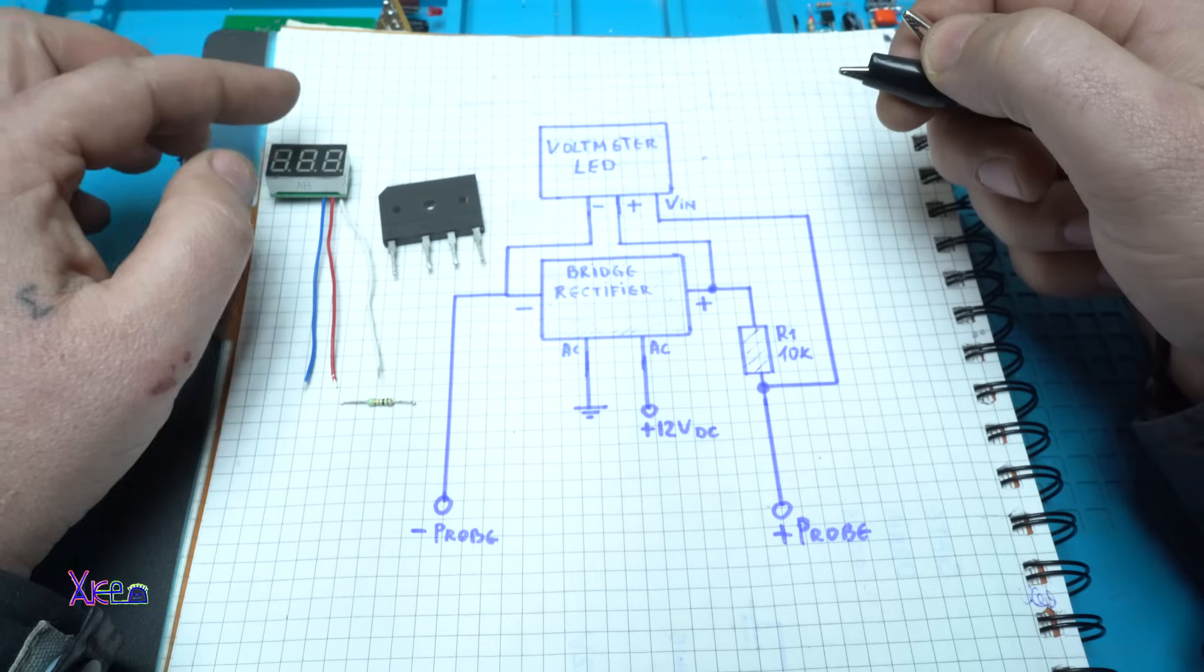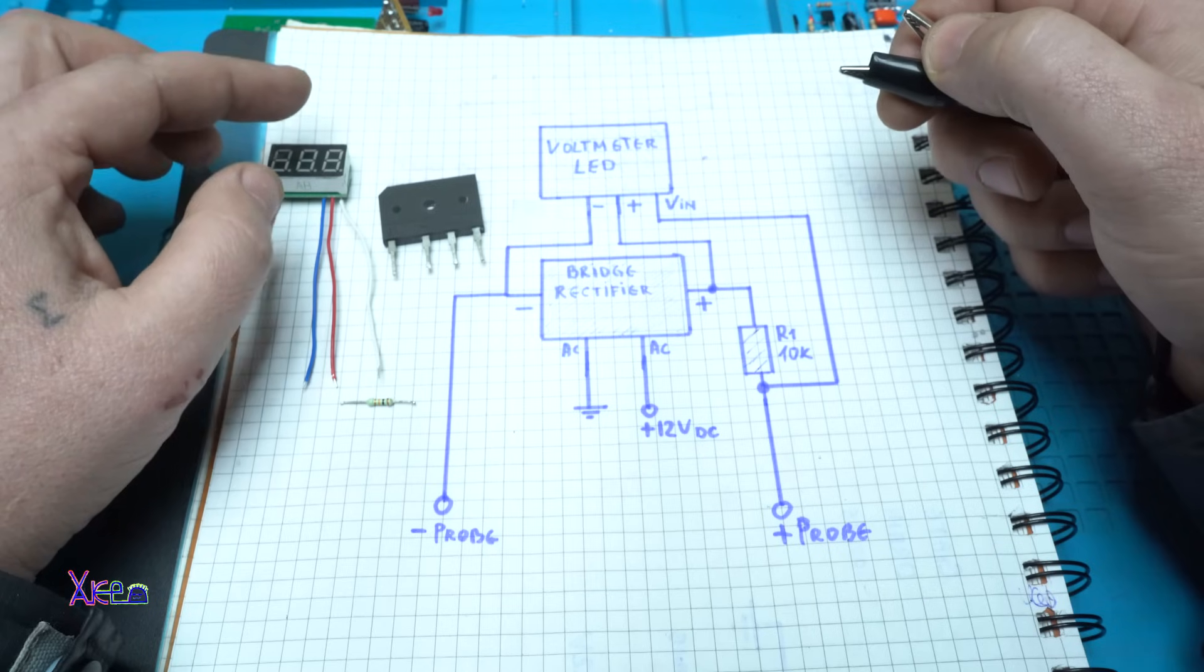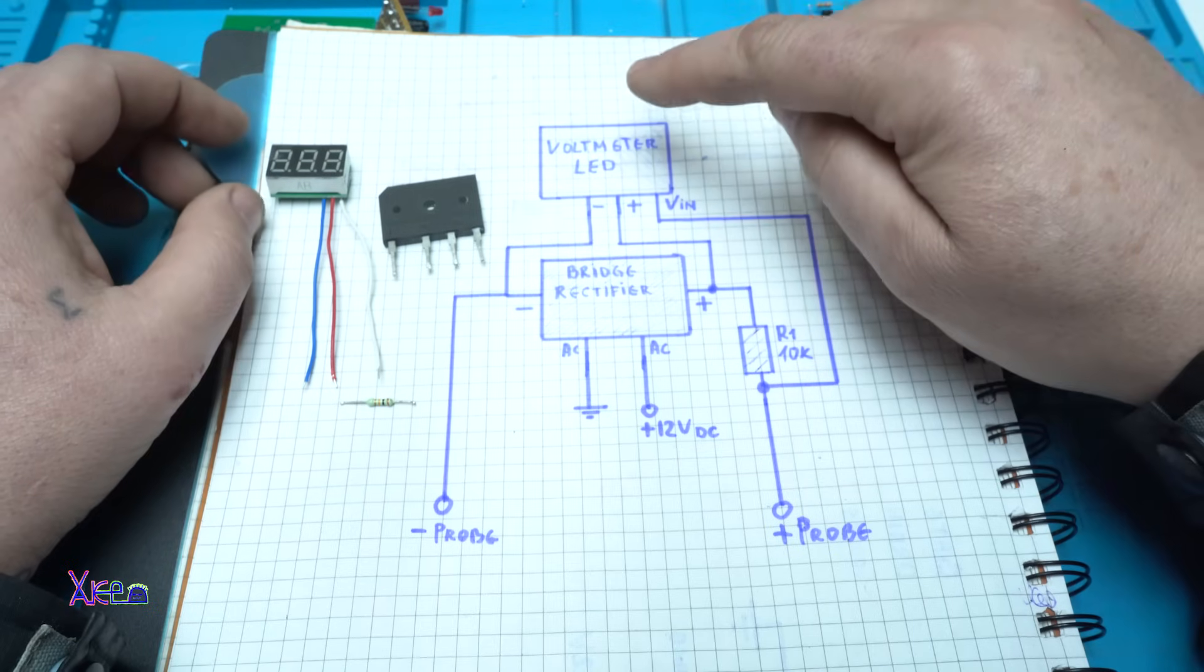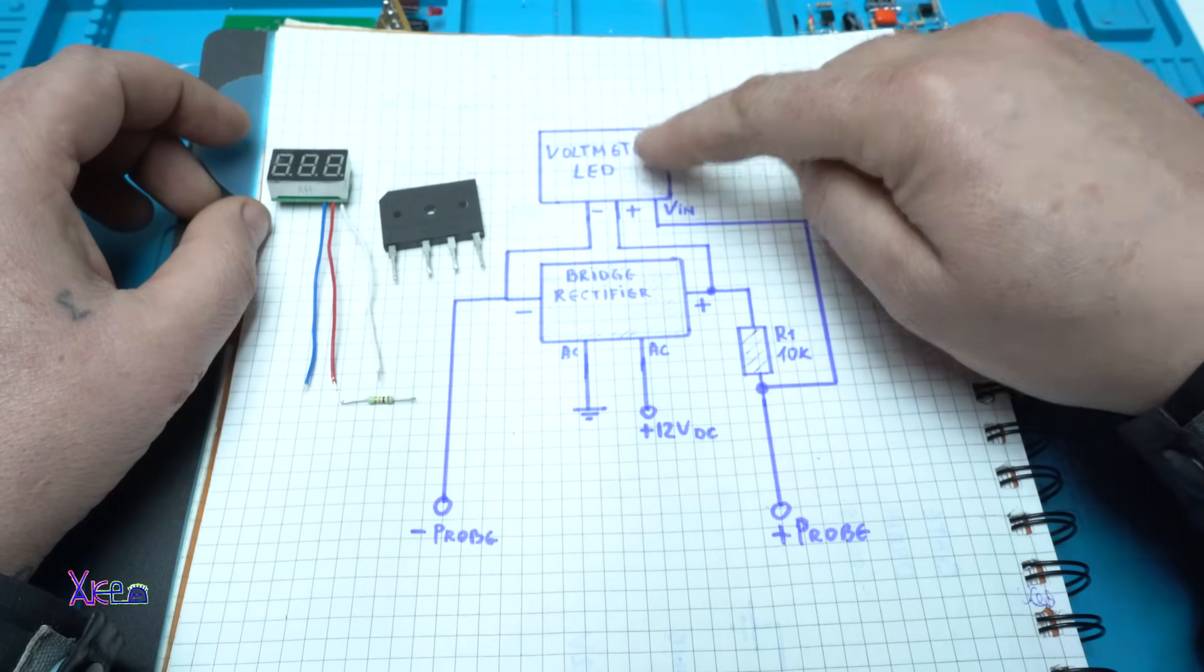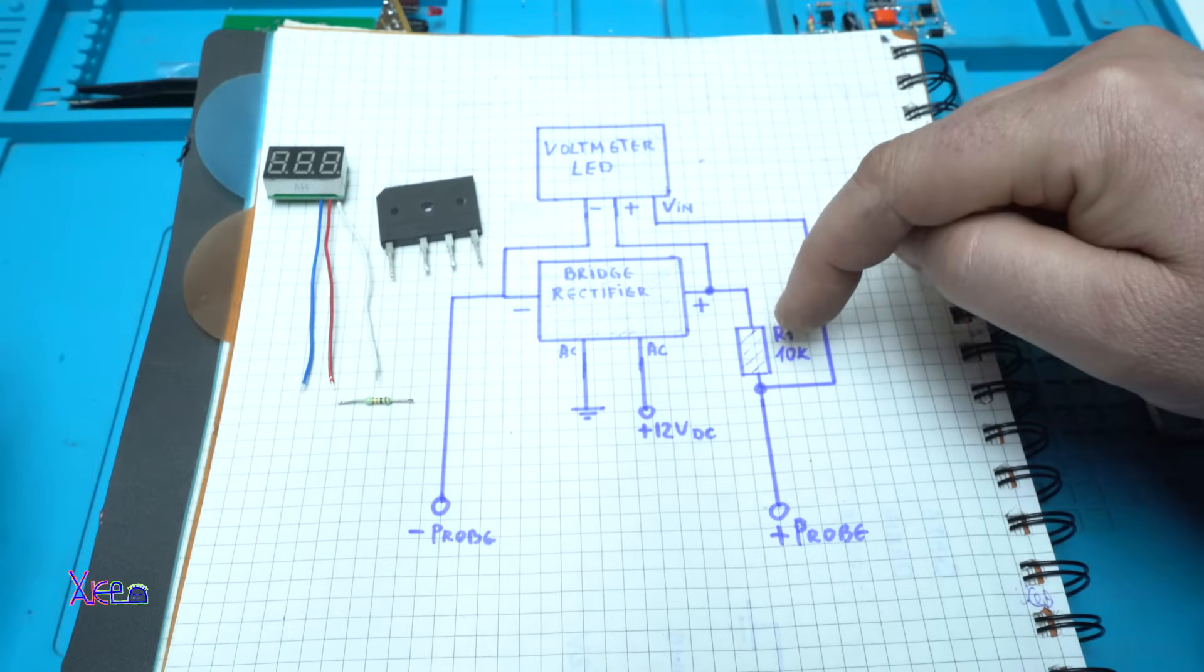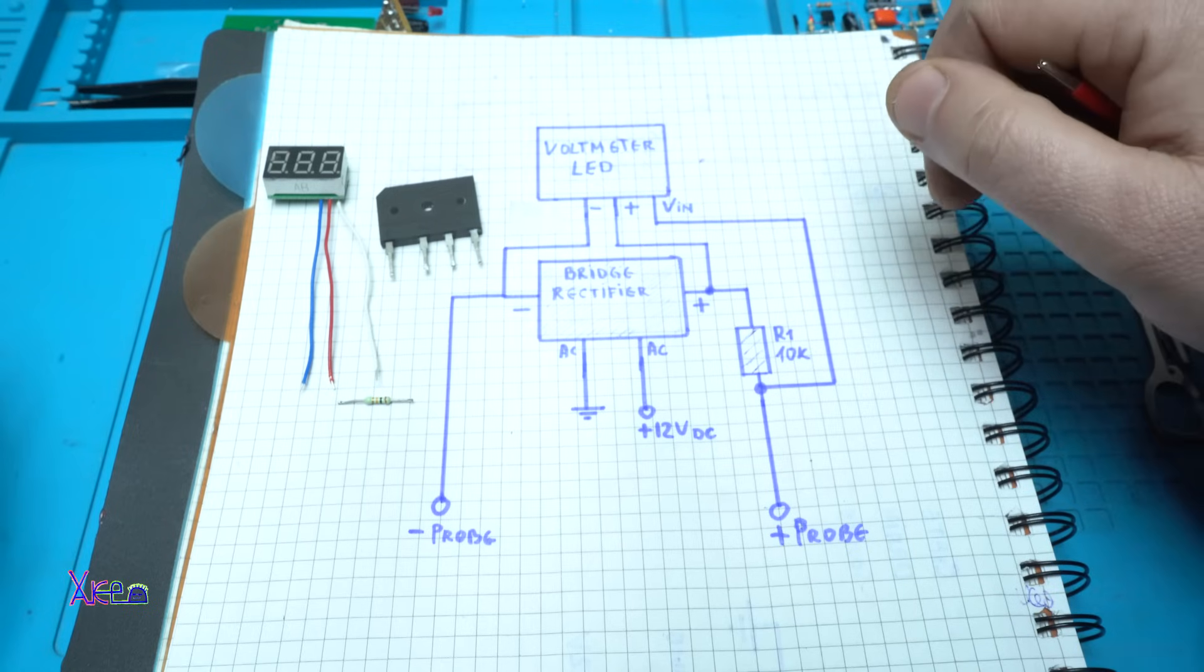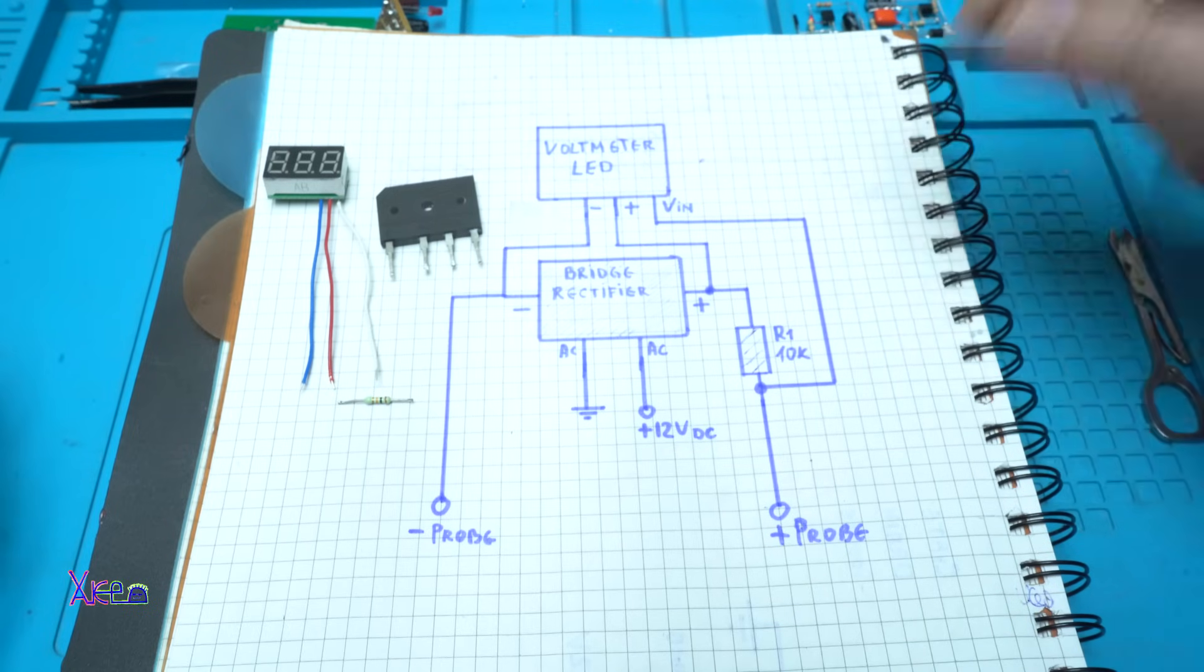Drop voltage for electronic components. And it's simple. Here is the circuit diagram. As I said, one LED voltmeter, one bridge rectifier, and one resistor of 10 kilo ohms. Here is the circuit diagram. You can pause the video and take a screenshot.